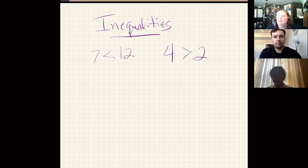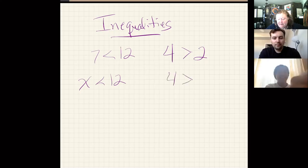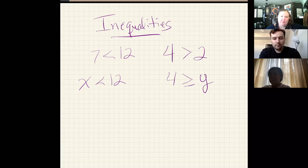But when they're introduced in earlier years, it's just numbers typically. So it'll be something like 7 is less than 12 or 4 is greater than 2. And now that we've moved into seventh grade math, we start seeing things like x is less than 12.